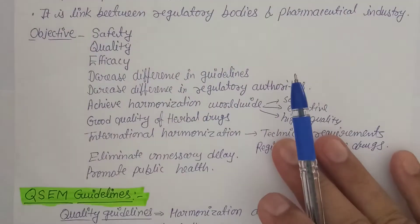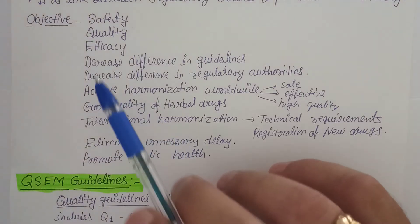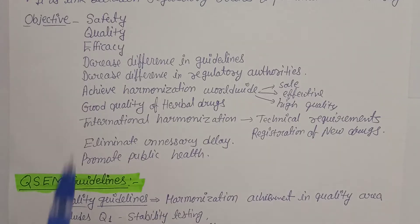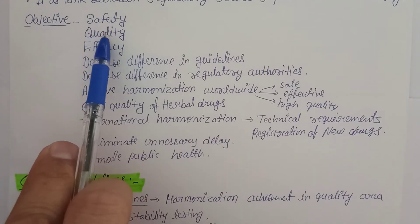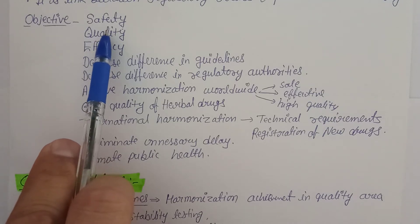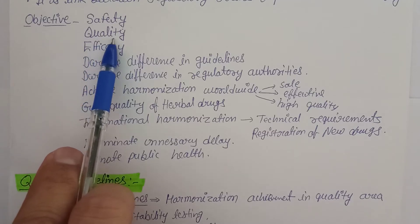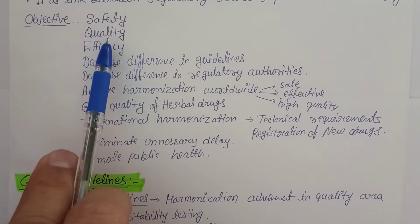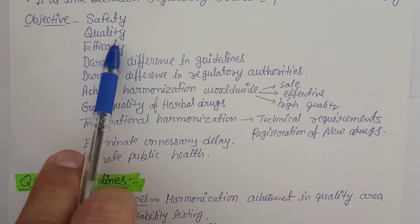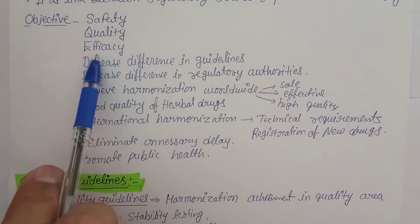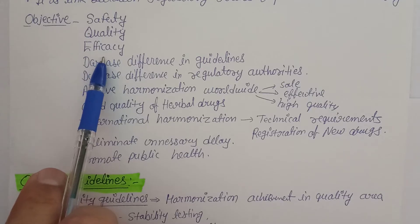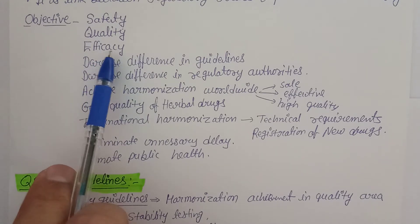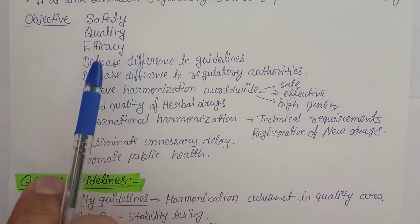ICH has certain objectives. The first is safety — any herbal drug coming to market must be safe; otherwise it will cause side effects or adverse reactions instead of therapeutic effects. Second is quality — the ingredients must meet quality standards. Third is efficacy — if it is meant for anti-diabetics, it should reduce blood sugar and urine sugar levels; if for anti-inflammatory, it should reduce inflammation.